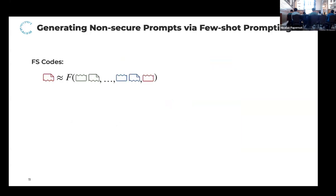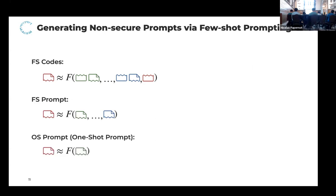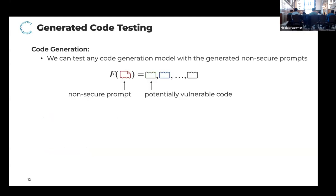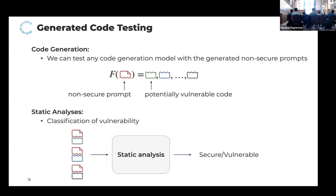In total, we tested three different approaches. The first, more classical one, showed the vulnerable code plus the potential prompt as a few examples, and at the end showed only the vulnerable part of some code and asked for the respective input prompt. We also tested approaches where we only showed the input prompts without the vulnerabilities themselves, and also a one-shot approach where we only showed one sample of a prompt.